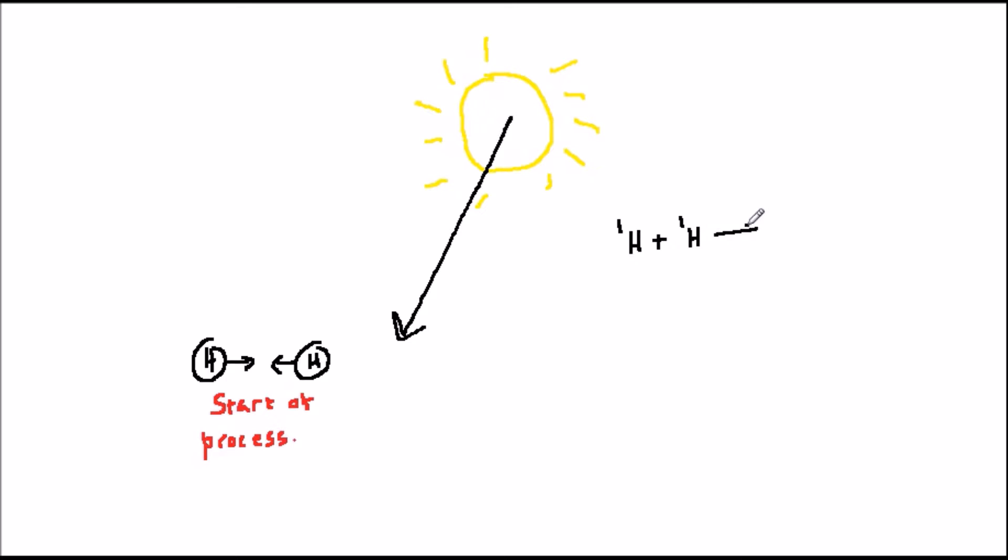Nuclear fusion is what powers the Sun. At the Sun's heart, at immense temperature and pressure, the nuclei of hydrogen atoms, which are just protons, are squashed together and fuse or join to become helium.